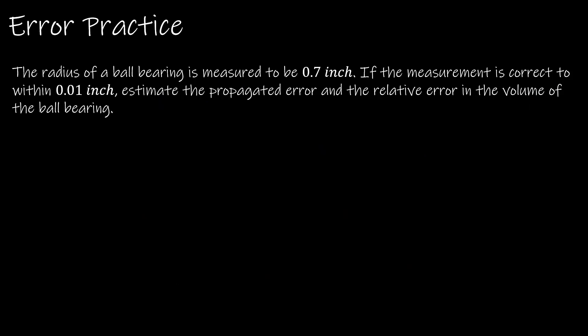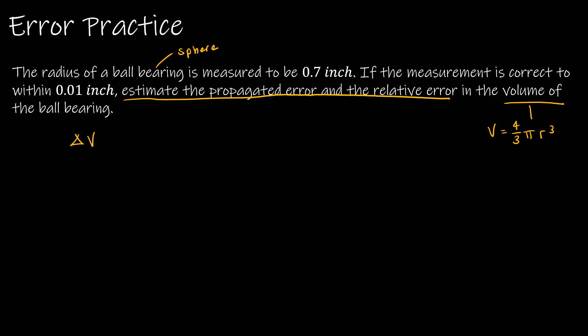Let's do a practice problem all the way through — we're going to estimate the propagated error and relative error using the differential. We've got the radius of a ball bearing, which is essentially a sphere, so we need the volume of a sphere: V equals 4/3 pi r cubed. I'm going to take delta v approximately equal to dv, and dv is the differential of this function. Differentiating 4/3 pi r cubed gives dv equals 4 pi r squared dr.